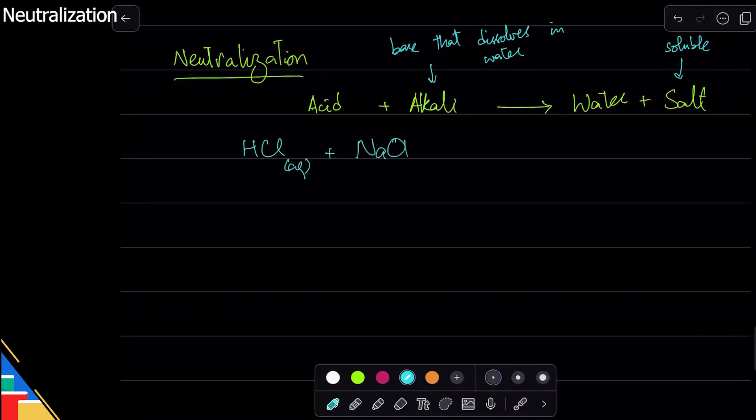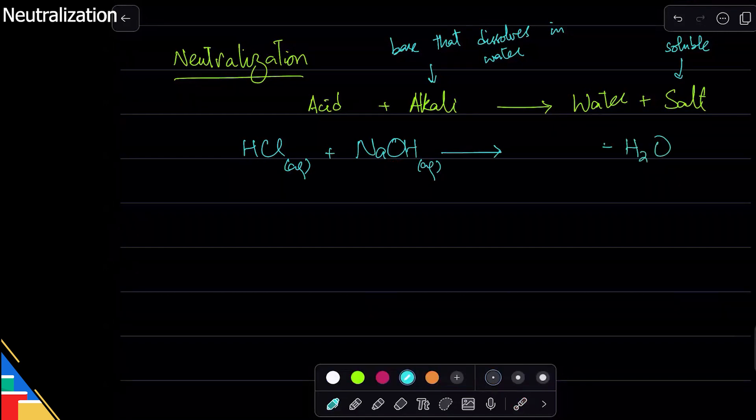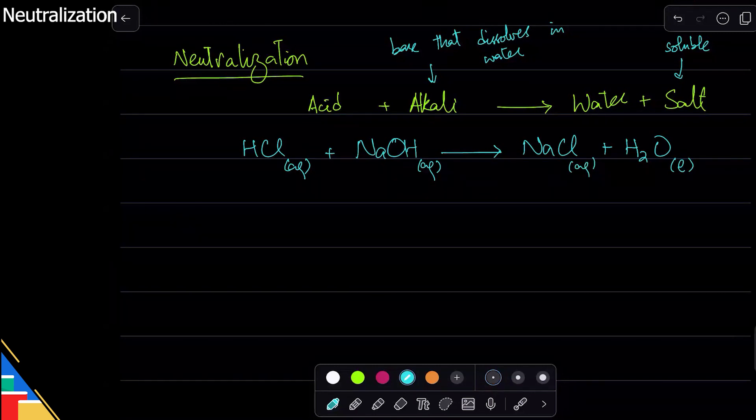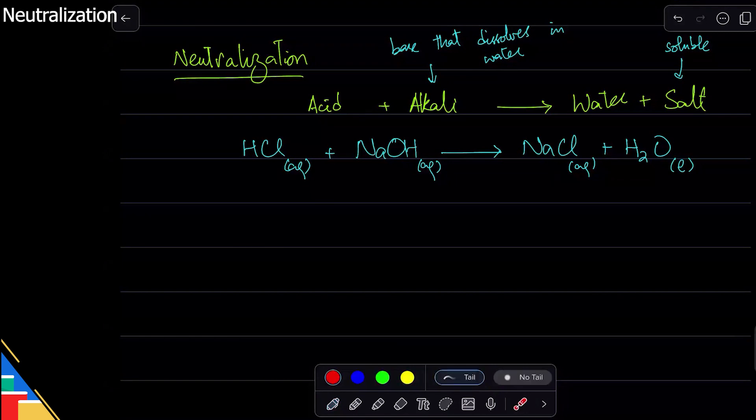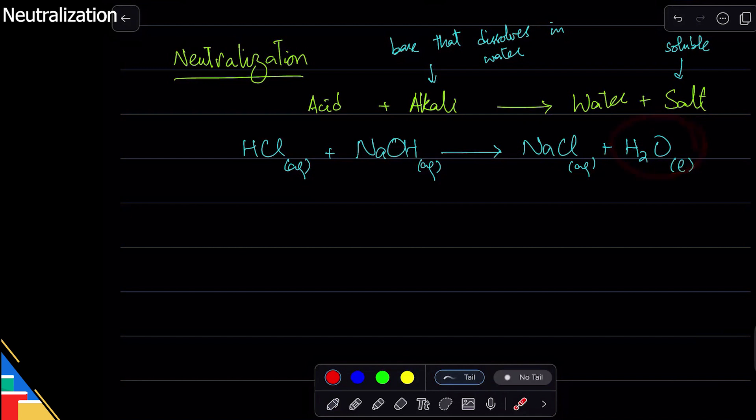I'll give you an example. I take HCl aqueous solution and react it with sodium hydroxide, a very strong alkali highly used in the world. The hydrogen ion from acid and hydroxide ion from alkali react to make water, and whatever is left reacts together to make sodium chloride. This is liquid, and to show that salt is soluble we put (aq) there. So hydrogen and hydroxide reacted to make water, and the rest combined.